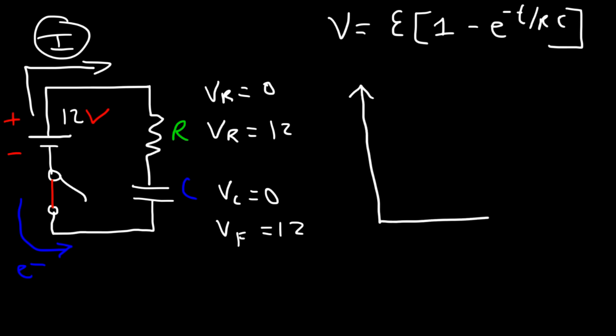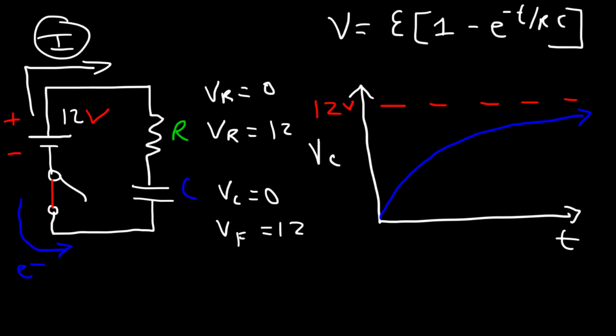The graph looks something like this: the EMF of the battery is 12 volts, and the capacitor charges progressively towards 12 volts, starting from zero. Depending on the resistance and capacitance, this affects the shape of the graph, but it increases toward 12 and then becomes a horizontal line. There's something called tau, the time constant, which equals the product of resistance and capacitance — RC — and has units of ohms times farads.